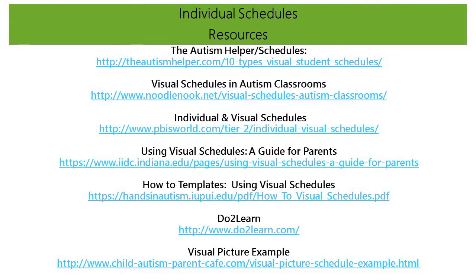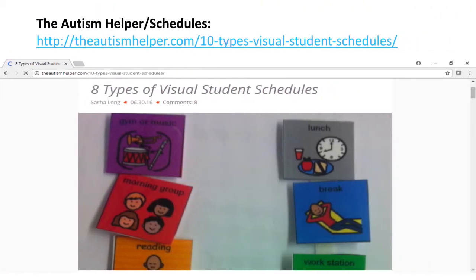Listed on this slide are resources available when creating individual schedules for each student. One example is the Autism Helper website, which links to an article with pictures describing eight types of visual schedules.